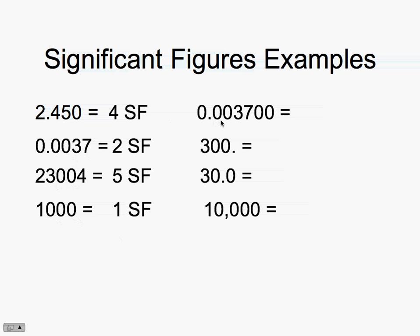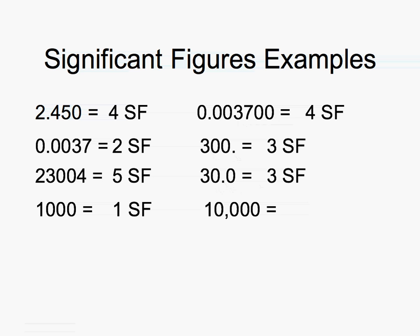For the next example, we have two rules at play: zeros to the left of a non-zero number are not significant, but because this number has a decimal point, it makes the trailing zeros significant. So we have four significant figures in that number. Another number with a decimal place gives us three significant figures — whenever we have a decimal place it makes those zeros significant. The number 30.0 gives us three significant figures because the decimal point makes that zero significant. And 10,000 with no decimal place means we only have one significant figure.